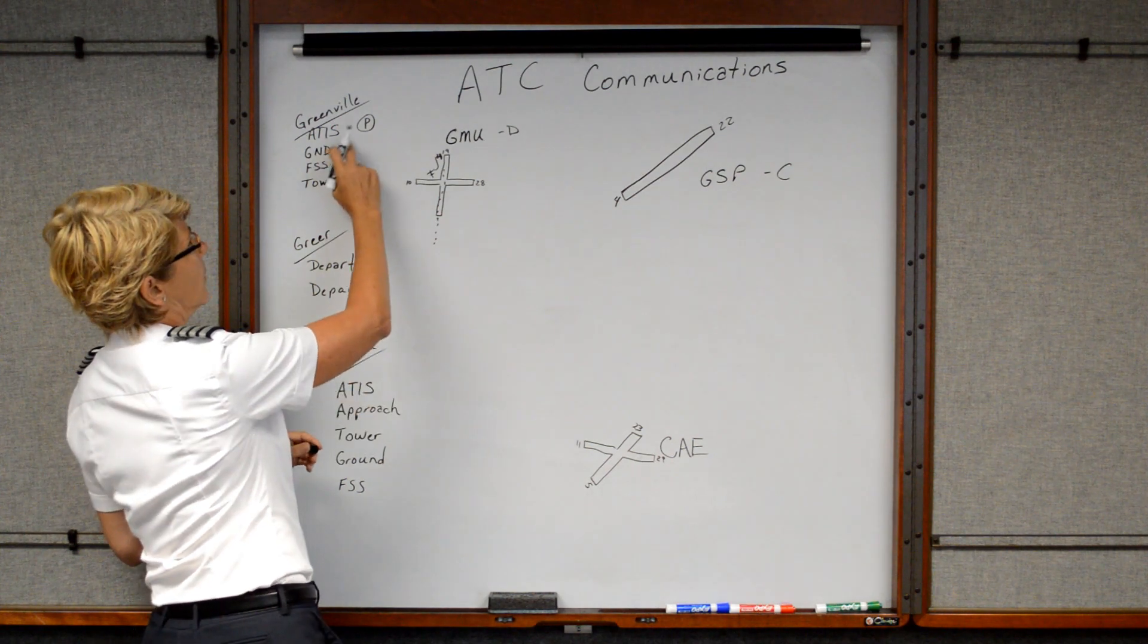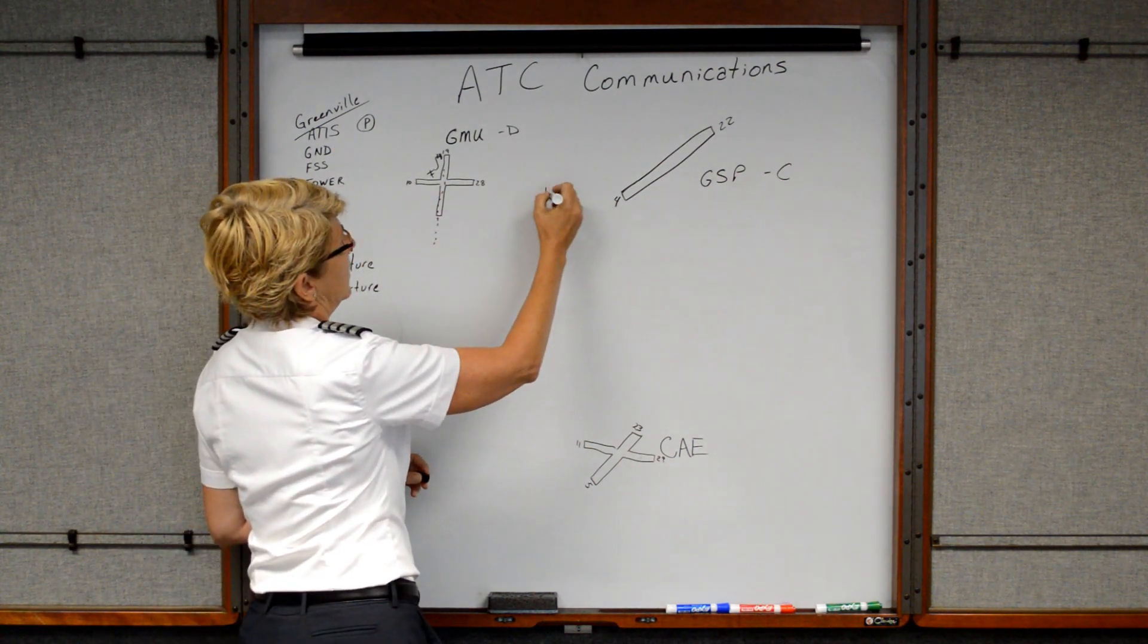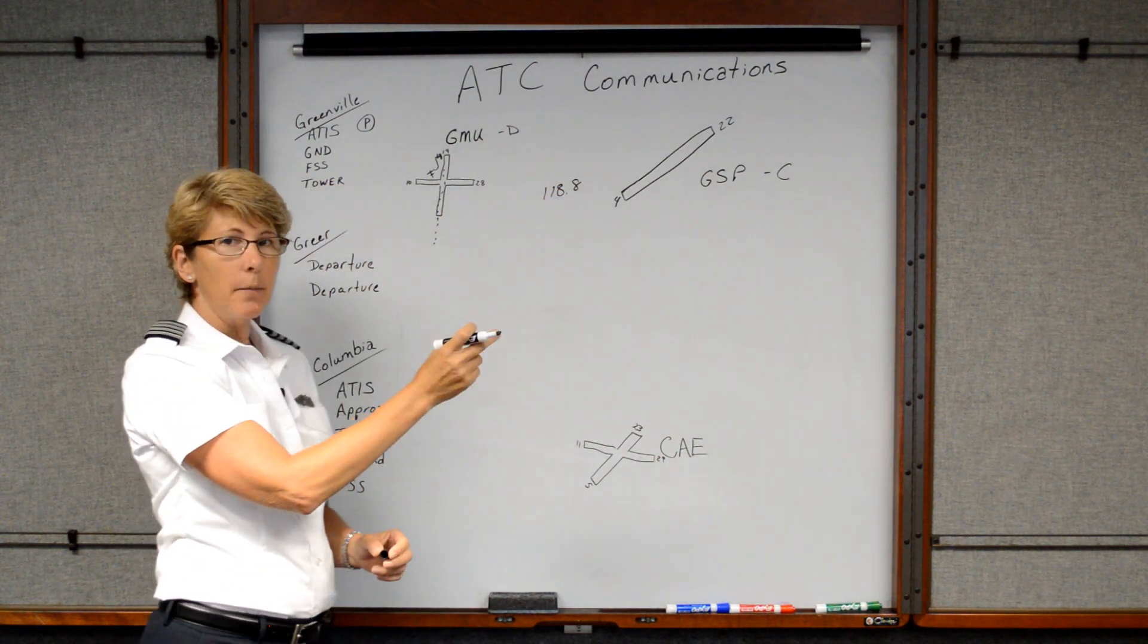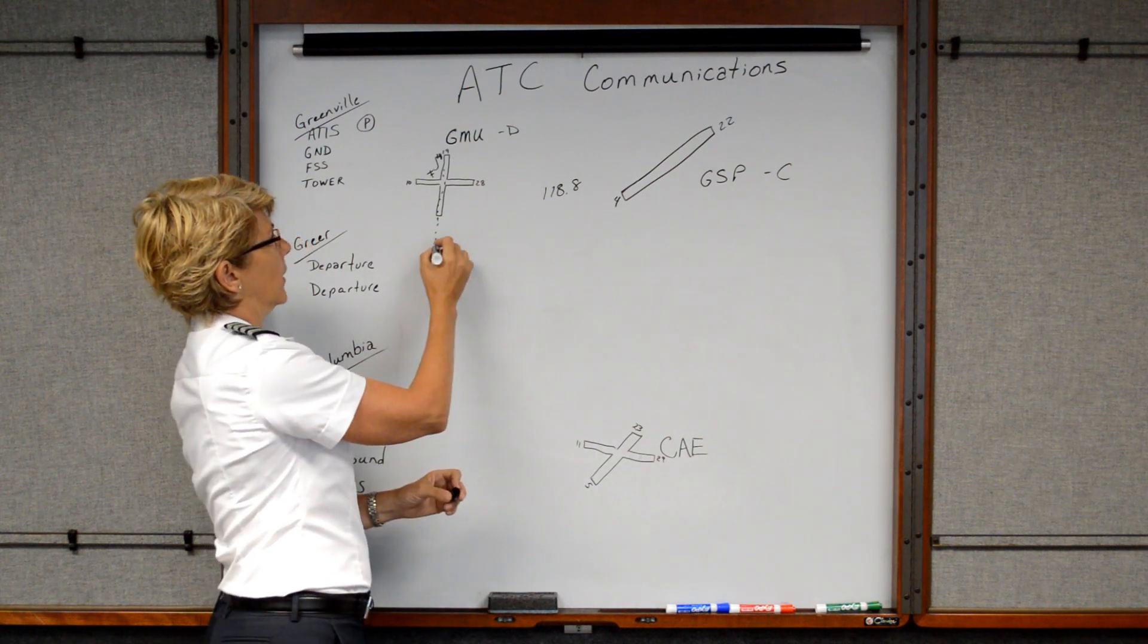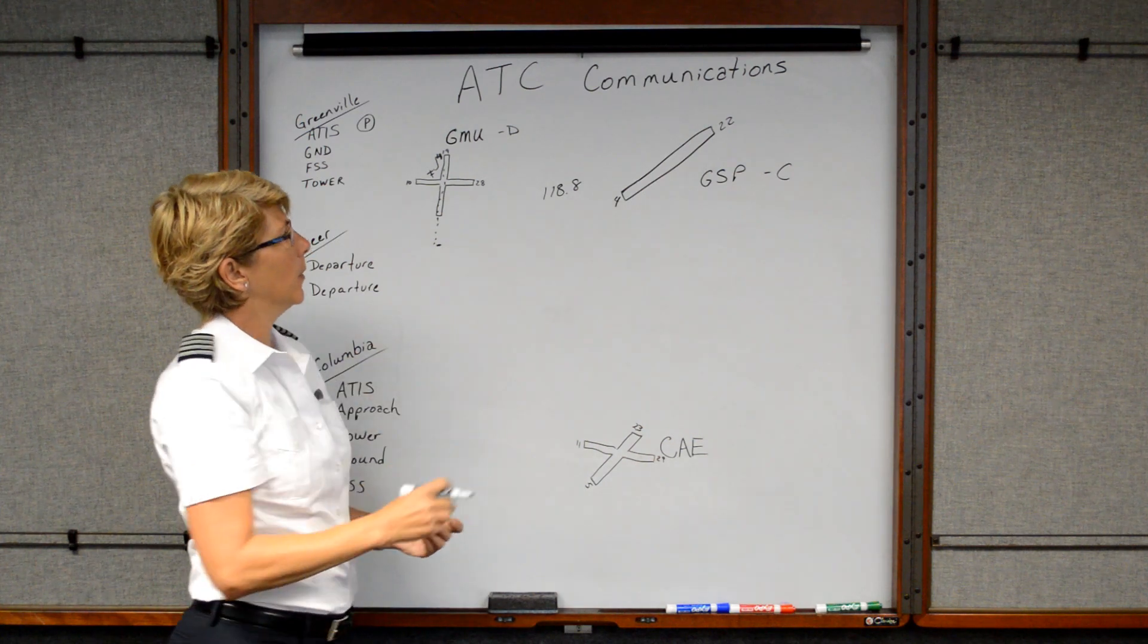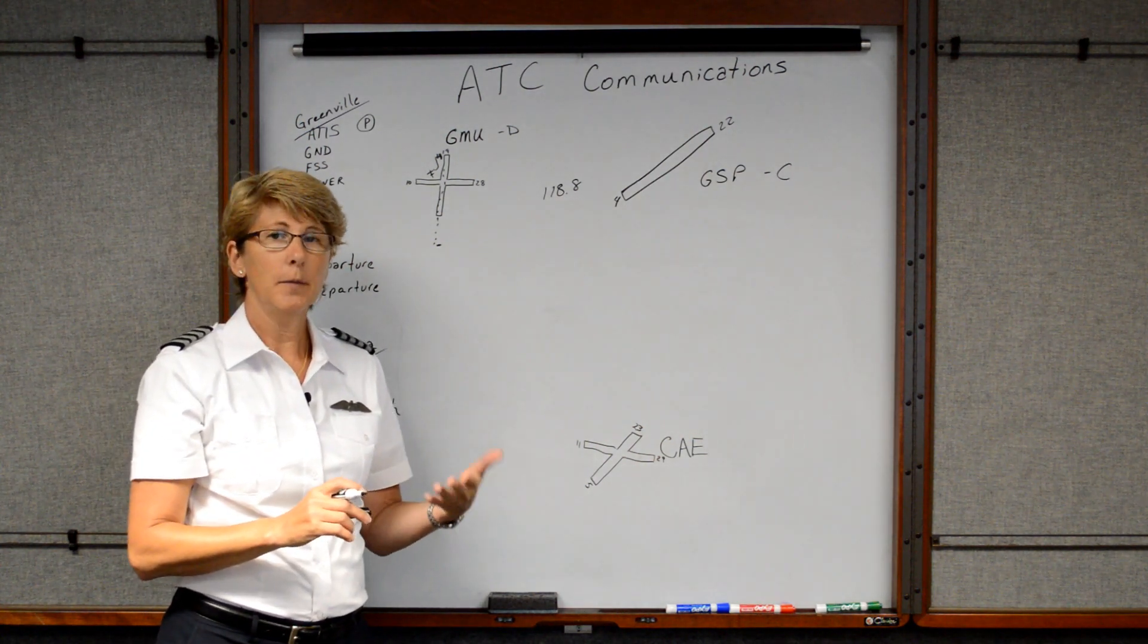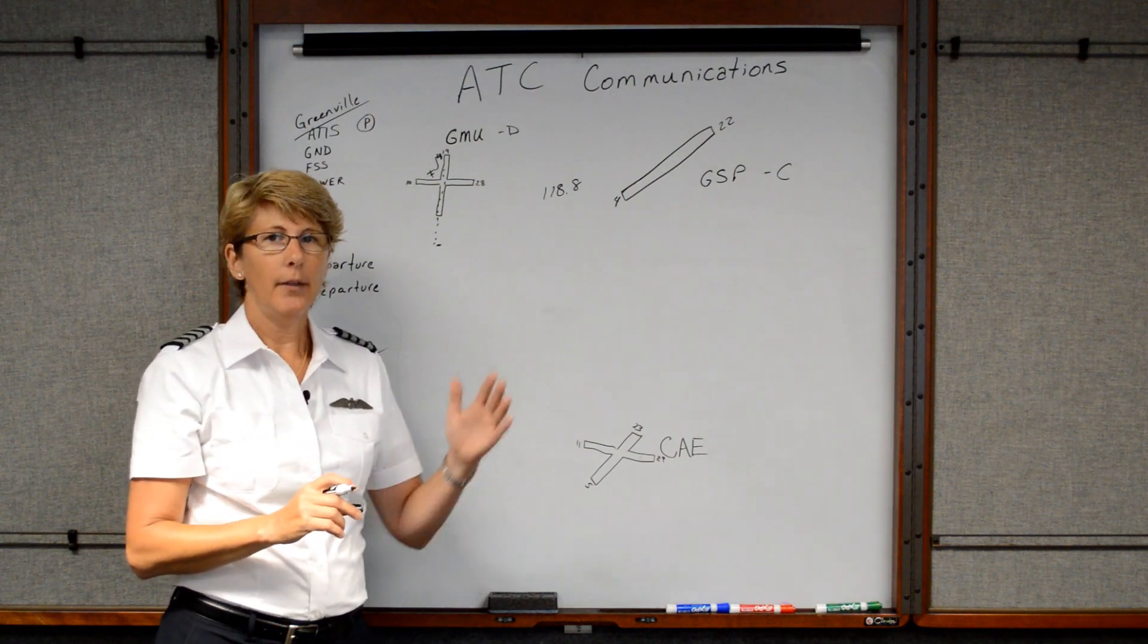Now some point on our takeoff, usually around say 500 feet, they will tell us to contact departure. Well they will have already given us the departure frequency to use, which in this area happens to be 118.8. So we will hopefully have put that in our standby radio so we can easily flip flop the frequency. Now as we're climbing out, they want us to contact Greer at the GSP Airport. So we have to tell them our full call sign, because this is our initial call up, as well as the altitude and the heading we're traveling.